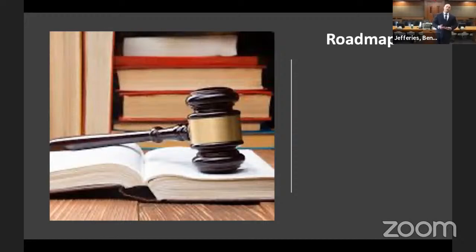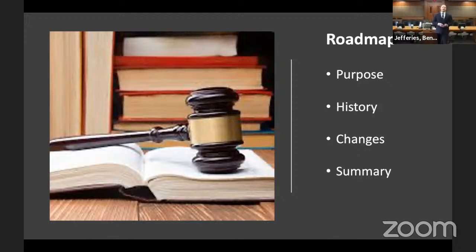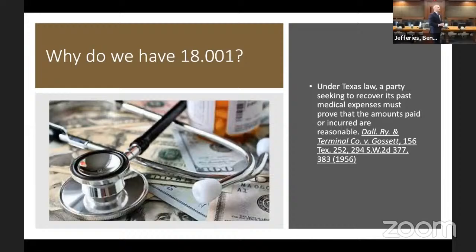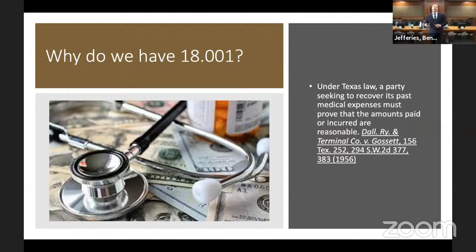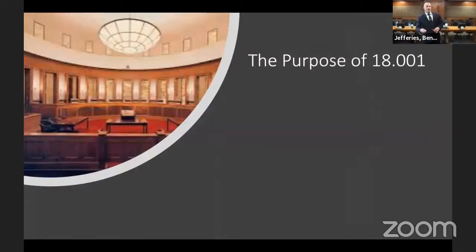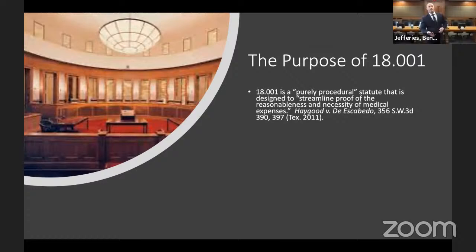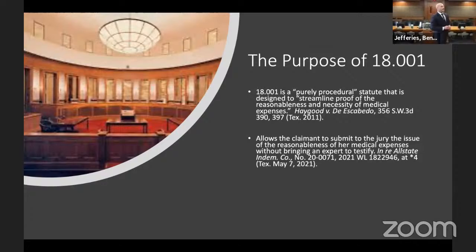We're going to first talk about the purpose of 18.001, discuss the history, address several recent changes, and then give a quick summary. So, what is the purpose of 18.001? Why do we need it? It's a longstanding practice that under Texas law, in order for a plaintiff to recover damages for costs they've incurred, they have to prove those costs are reasonable and necessary. Rule 18.001 provides a procedural method to do that. Its basic function is to streamline this process, which saves time and money for everybody.